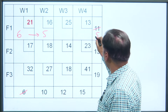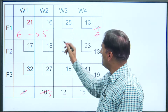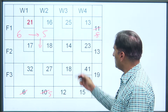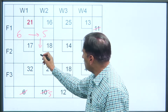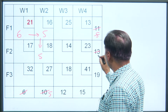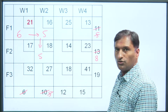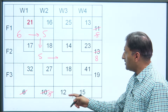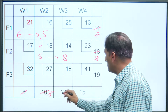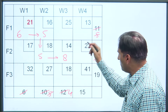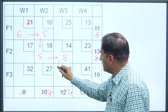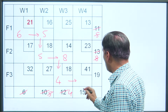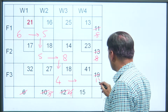F1 is now exhausted (5 allocated to W2), so we move down to F2. At F2→W2: remaining demand is 5 (10-5) and F2 supply is 13 — allocate 5. F2 has 8 remaining, W2 is exhausted, move right. At F2→W3: 8 and 12 — allocate 8. W3 has 4 remaining. F2 exhausted, move down to F3. At F3→W3: 4 and 19 — allocate 4. W3 exhausted, move right. At F3→W4: 15 remaining supply and 15 demand — allocate 15.